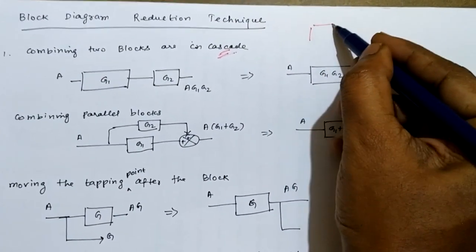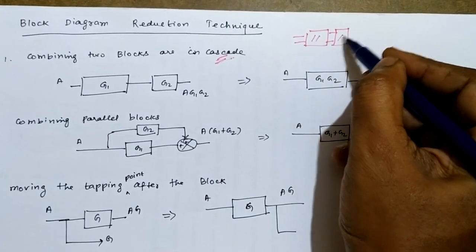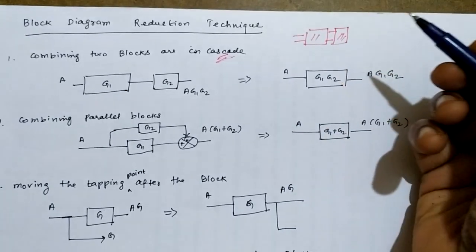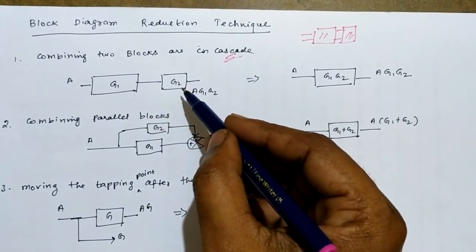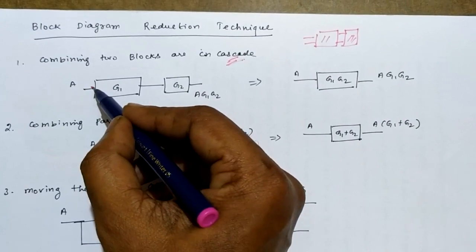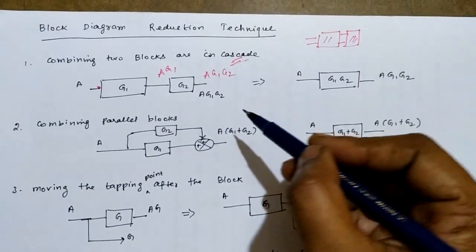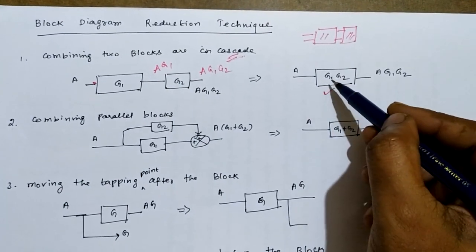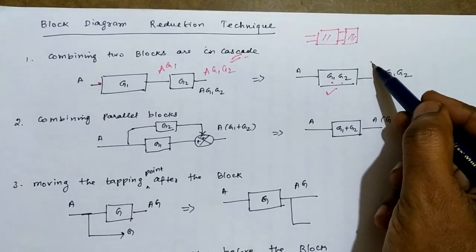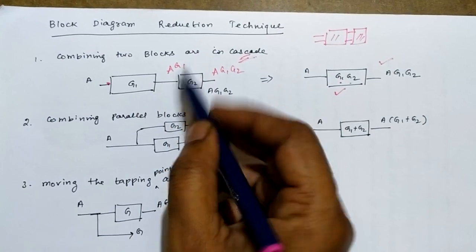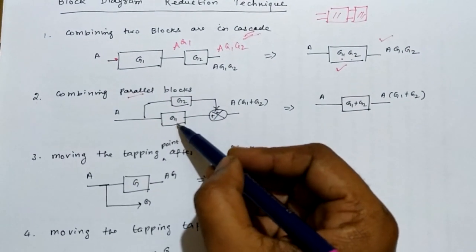Cascade means something like two blocks connected in series — this is the first block and this is the second block. The output of the first system is A into G1, and these two blocks are combined together to form a single block having the gain G1 multiplied by G2. The output of this single block is A into G1·G2.